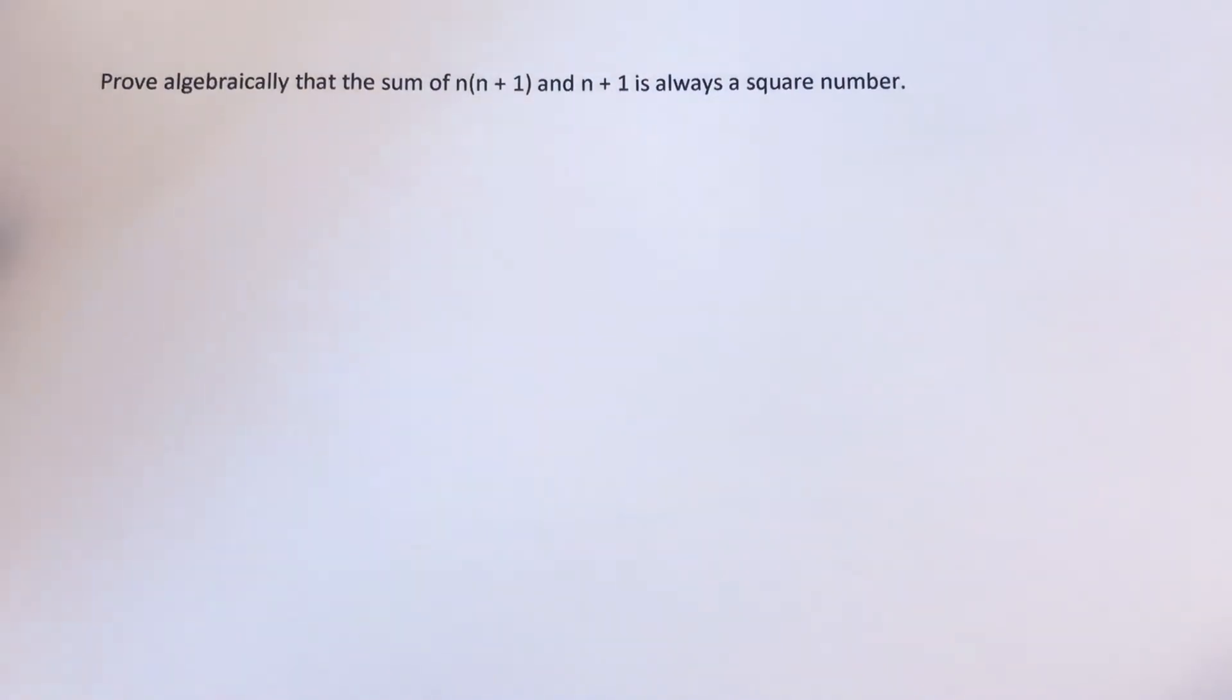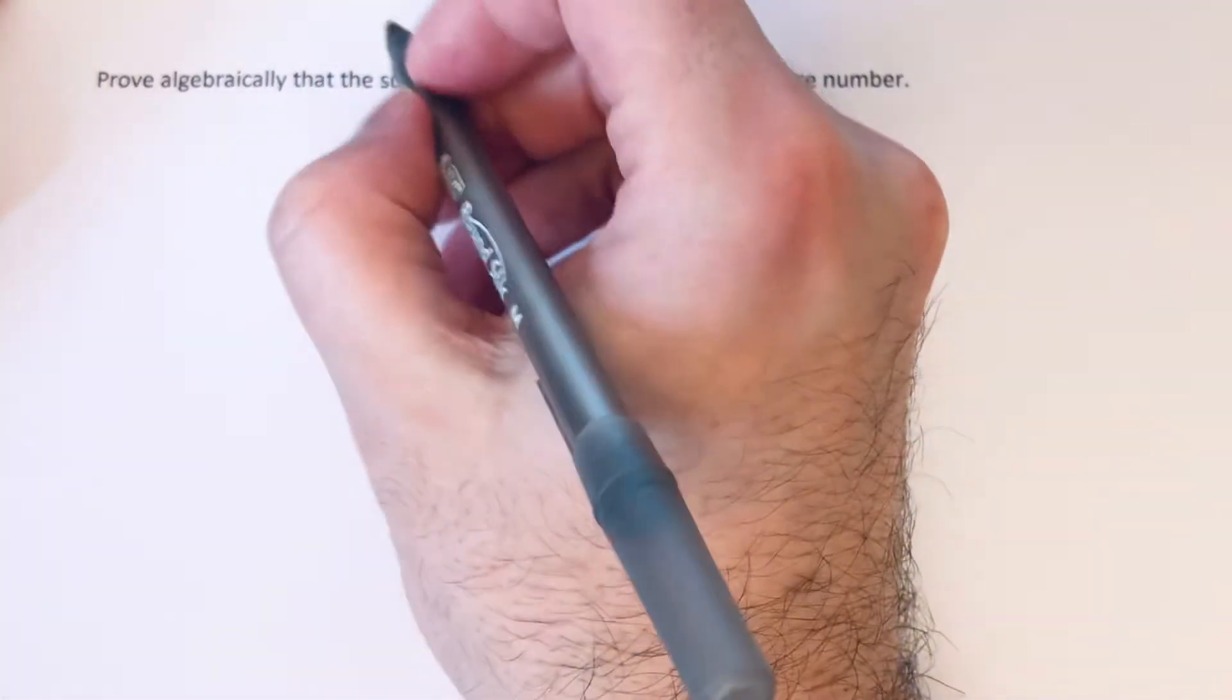Hi guys, welcome back. This is Maths 3000. Today we're going to prove algebraically that the sum of n(n+1) and n+1 is always a square number.